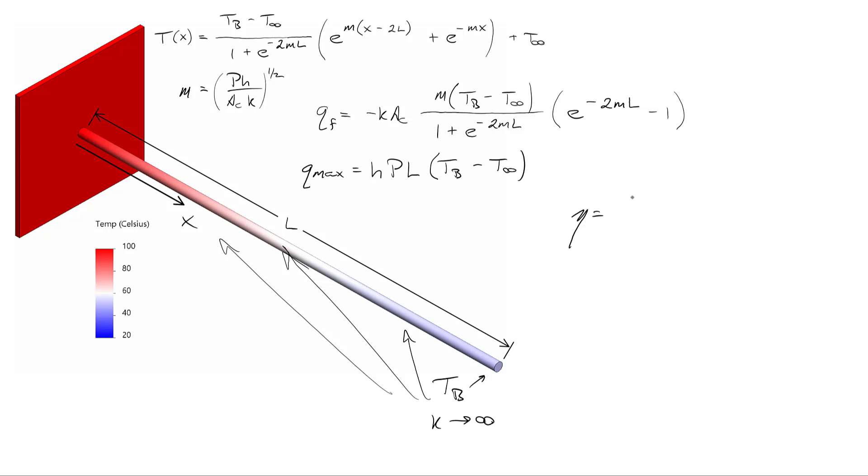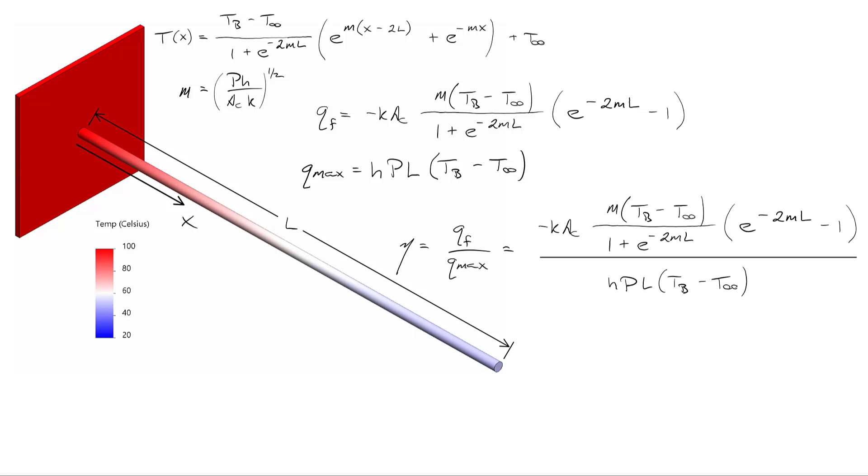So now let's define what engineers call the fin's efficiency, which is equal to the actual amount of heat that the fin withdraws from the base divided by the maximum amount of heat that could occur if the material hypothetically had a thermal conductivity that was infinite. So I've substituted the two equations for QF and Q max, and what we immediately see is that the temperatures fall out of that ratio. And let's note how we've defined our fin parameter. If I rearrange that, K times the cross sectional area divided by H times the perimeter is equal to 1 over M squared, we can use that to further simplify our expression for eta.